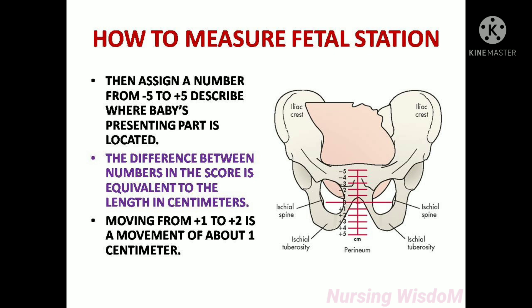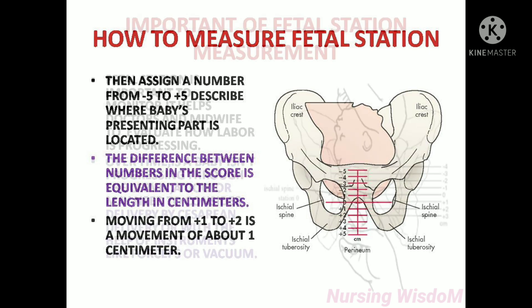A number from minus five to plus five is assigned to describe where the baby's presenting part is located. The difference between numbers in the score is equivalent to the length in centimeters — moving from plus one to plus two is a movement of about one centimeter.